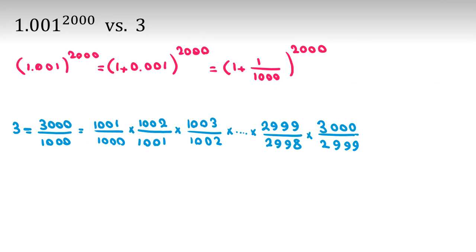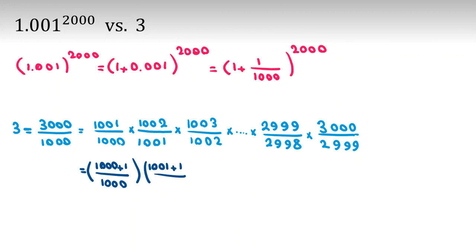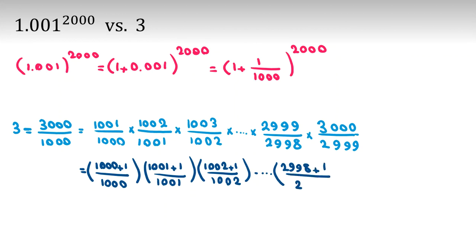Now we rewrite each fraction in the form 1 plus 1 over n. The first term 1001 over 1000 is written as 1 plus 1 over 1000. The next term becomes 1 plus 1 over 1001, then 1 plus 1 over 1002, continuing up to 1 plus 1 over 2999.